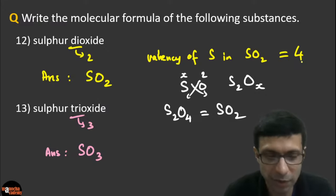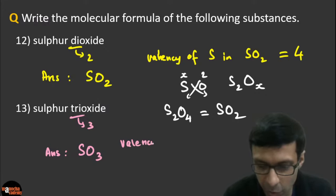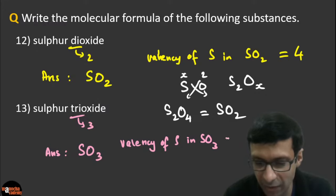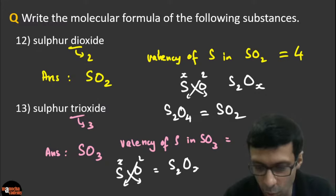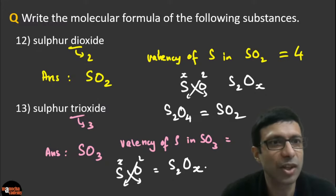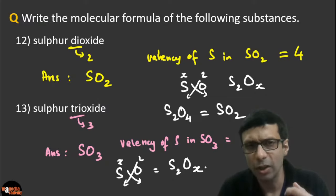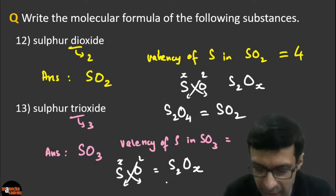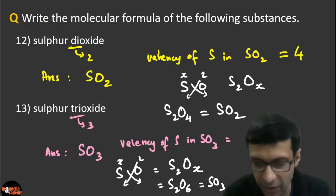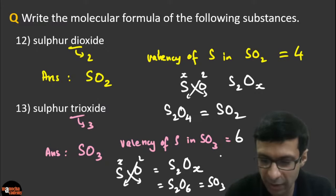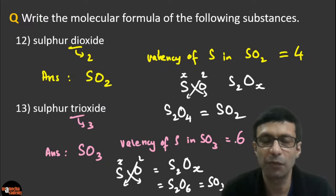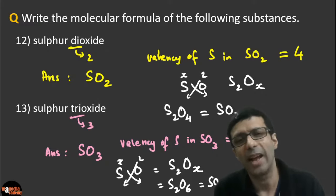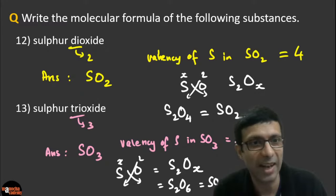What is the valency of sulfur in sulfur trioxide SO₃? Again, use the same technique — take it to be x. We get S₂Oₓ, and the value will be S₂O₆, which gives you SO₃. So valency of sulfur in sulfur trioxide is six. For these naming-based formulas, you don't need to think of valency just by the name — carbon dioxide is CO₂, nitrogen dioxide is NO₂, sulfur dioxide is SO₂, sulfur trioxide is SO₃. Now some more questions: write the molecular formula of lead(II) oxide. The Roman numeral II is telling you the valency — lead with valency two.